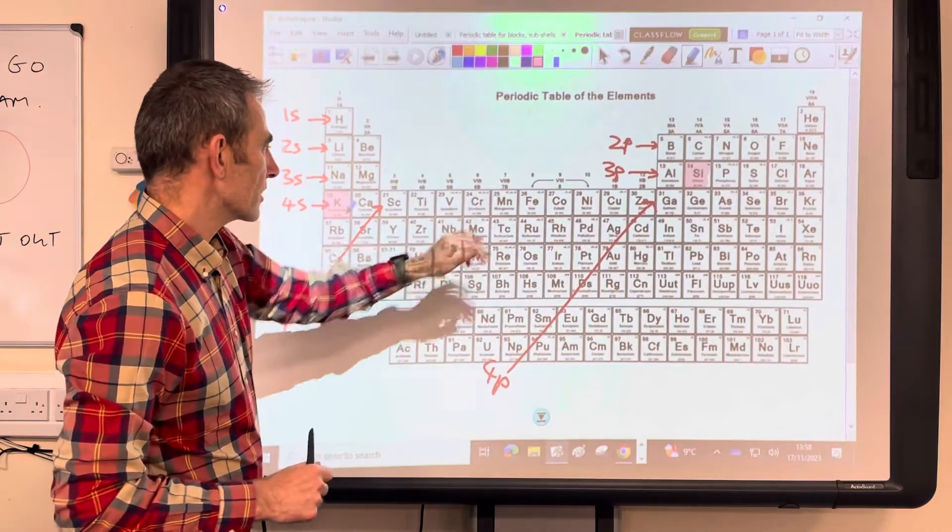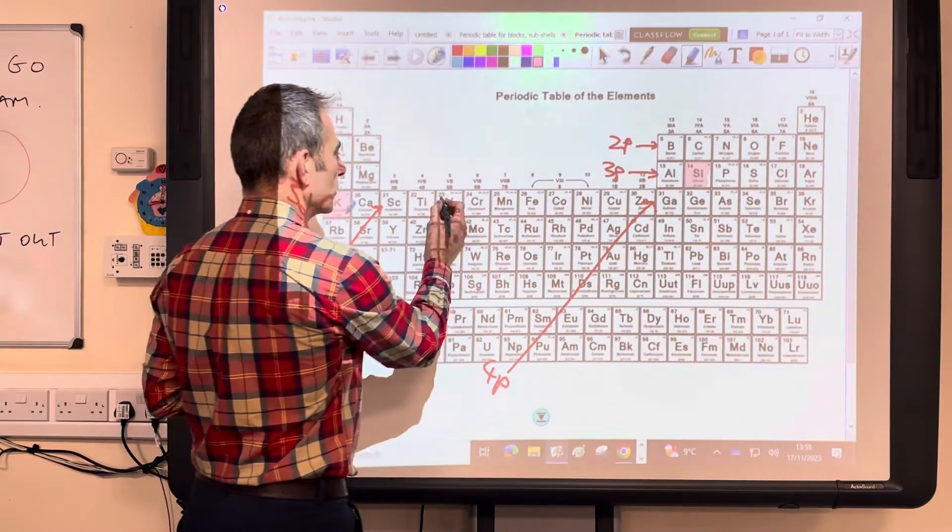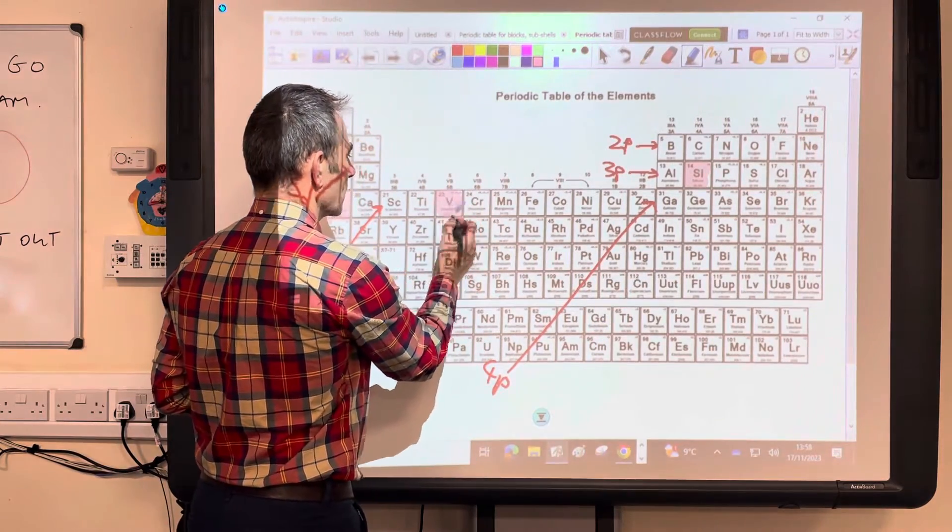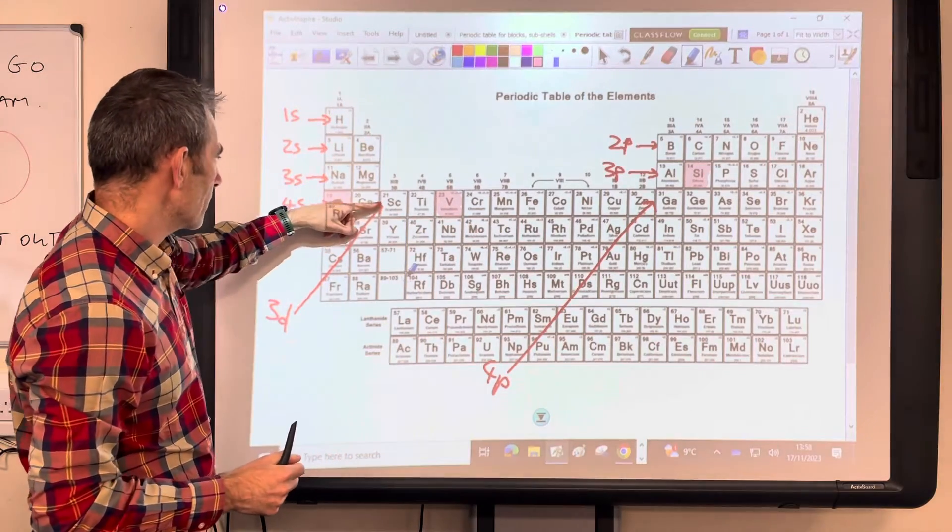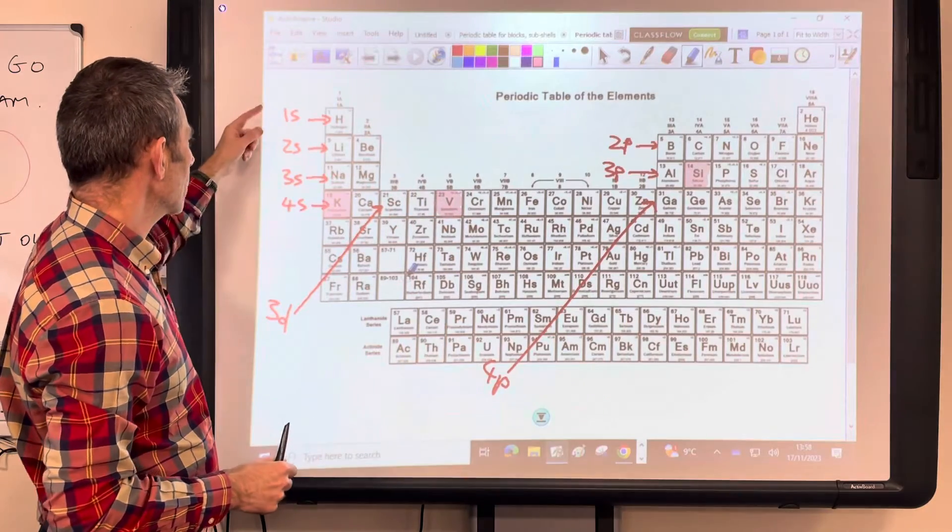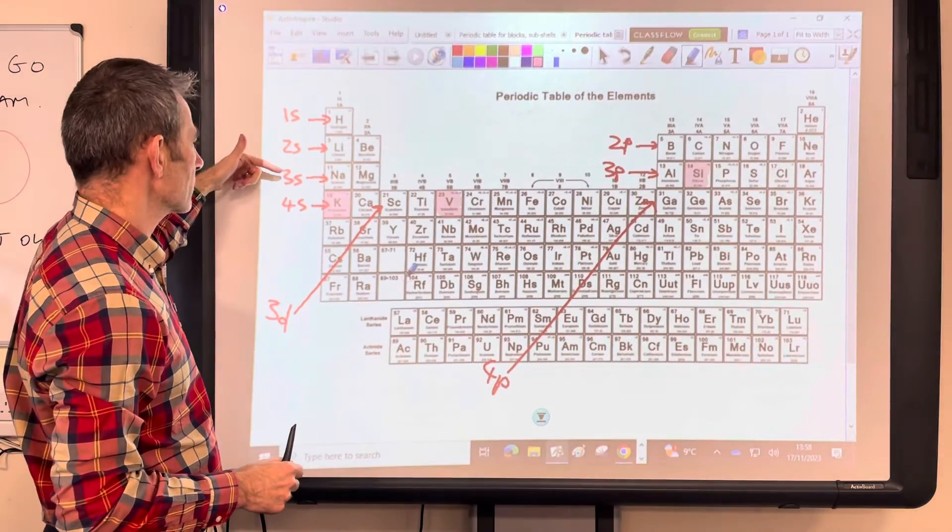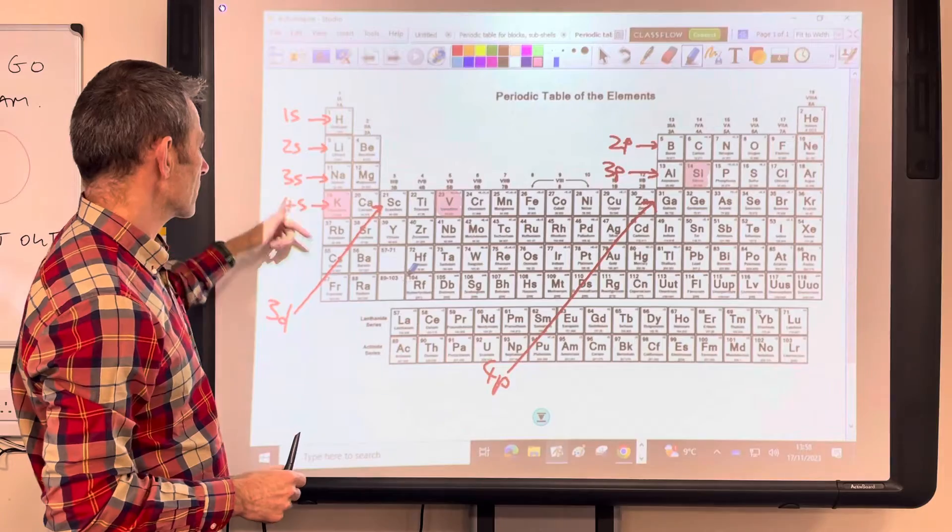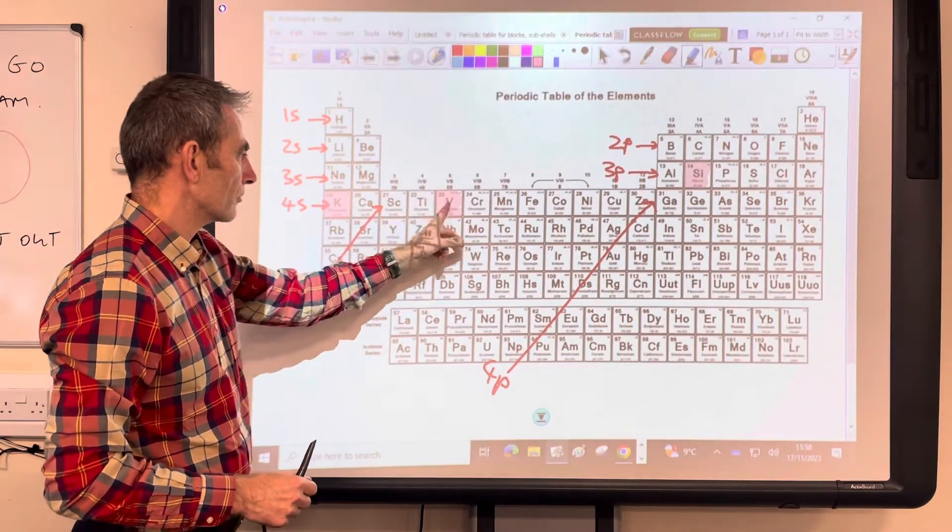We'll do one of the transition elements. So let's go vanadium. So what we're filling now, we're filling the 3d subshell. It's the third one in. So it's going to be 1s2, 2s2, 2p6, 3s2, 3p6, 4s2, 3d3.